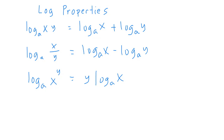Let's look at properties of logarithms. The first one is the multiplication property or product property — that's log with base a of x times y. Since you're multiplying x times y, you add: log base a of x plus log base a of y.